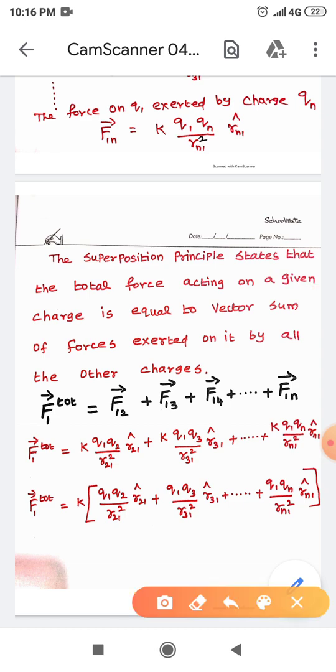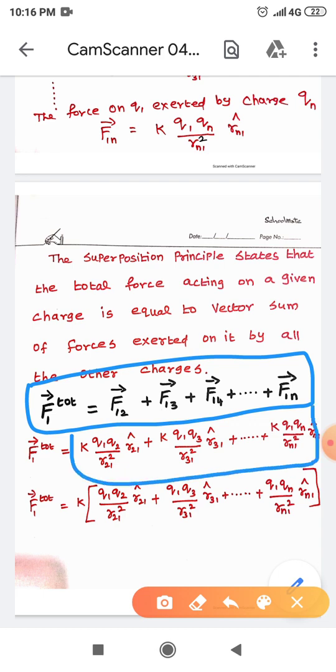Therefore, the total force on the charge Q1 is F1 total vector, which is equal to just add all the forces acting on it. You just substitute the corresponding expressions in this formula and finally take the K commonly out and you will be getting this expression. By this way, you can use the superposition principle to calculate the total force acting on the charge. Thank you, students.